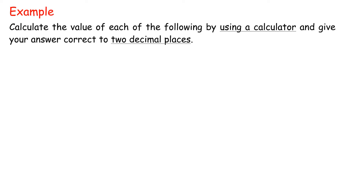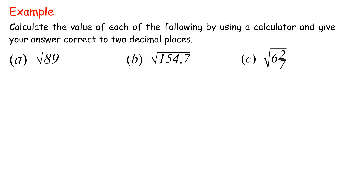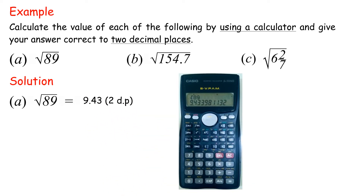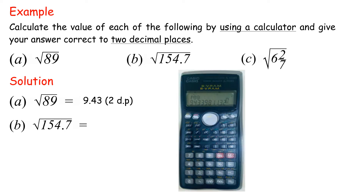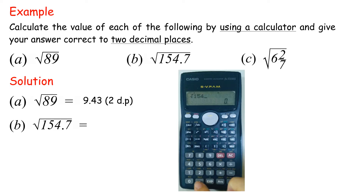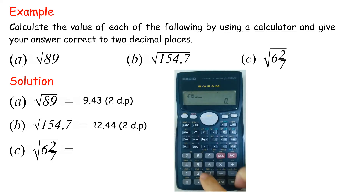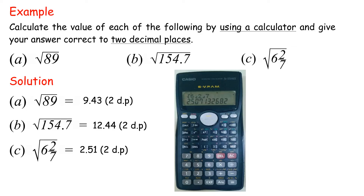Example: Calculate the value of each of the following by using a calculator and give your answer correct to two decimal places. Solution A: Square root of 89 equals 9.43. B: Square root of 154.7 equals 12.44. C: Square root of 6 and 2 over 7 equals 2.51.